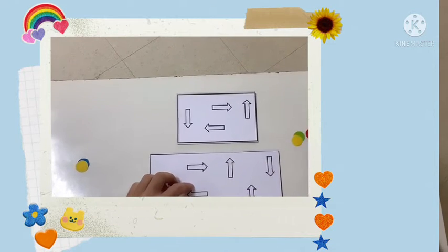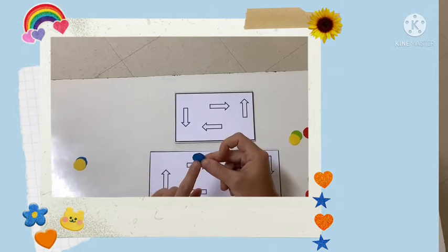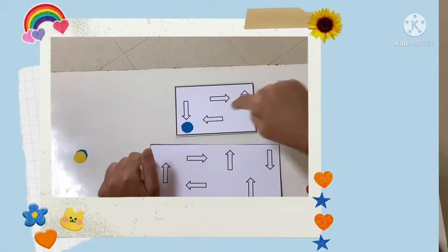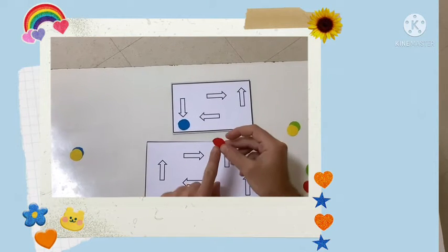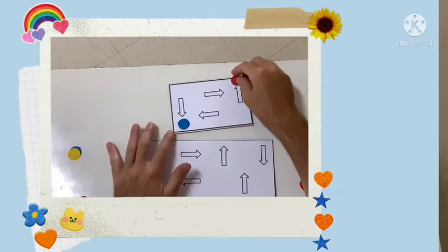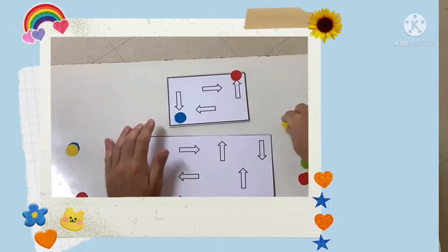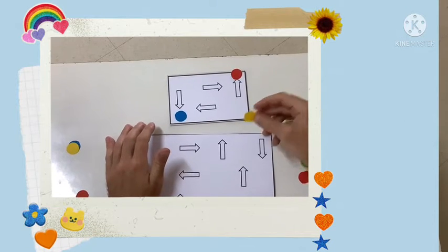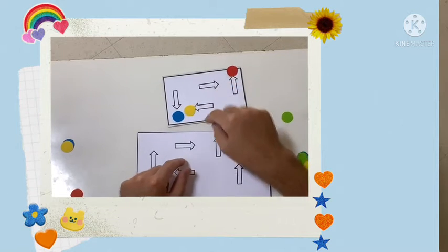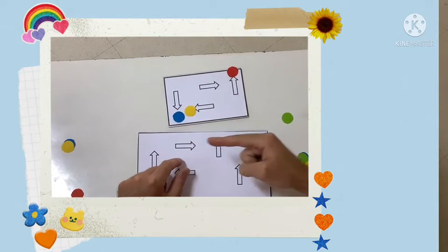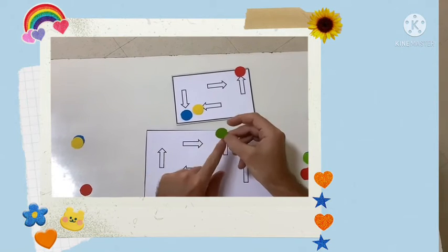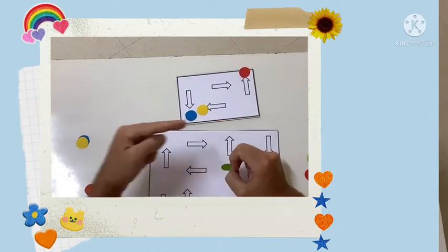We're going to put our blue circle for arrows going down, our red circle for arrows going up, yellow for arrows going left, and green for arrows going right.